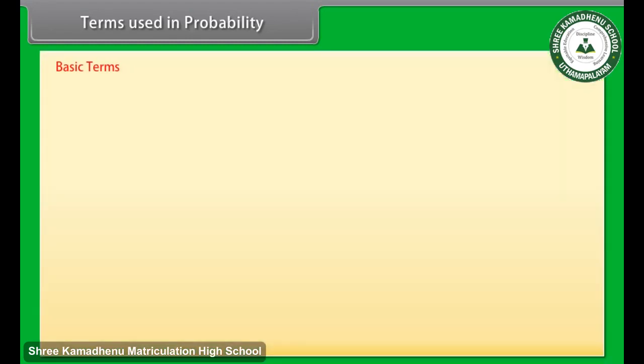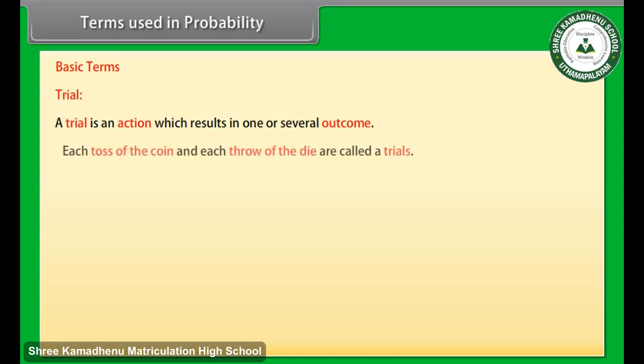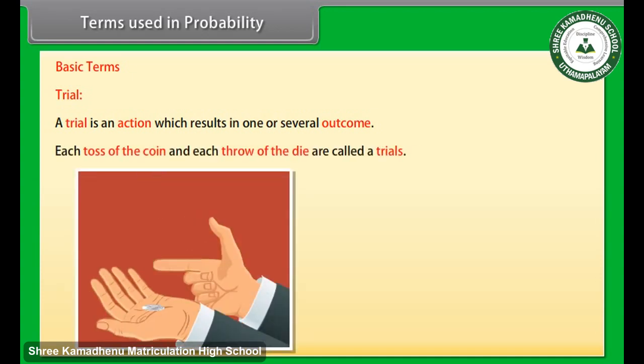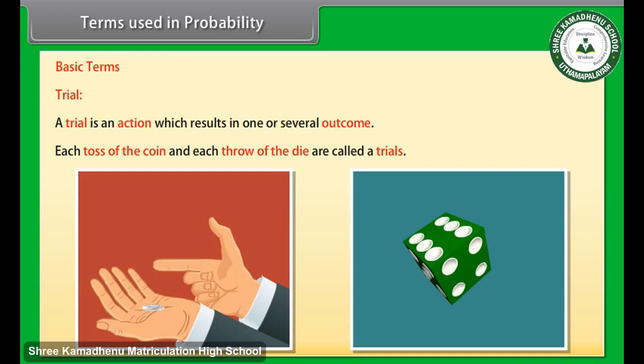Terms used in probability. Before going further, let's learn about basic terms used in probability. Trial: A trial is an action which results in one or several outcomes. For example, each toss of the coin and each throw of the dice are called a trial.